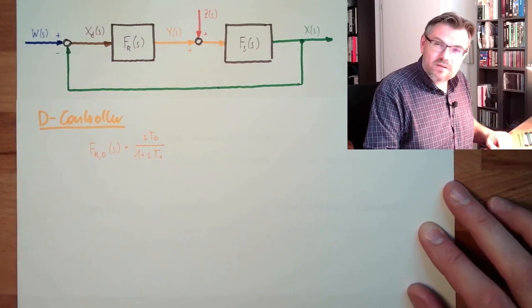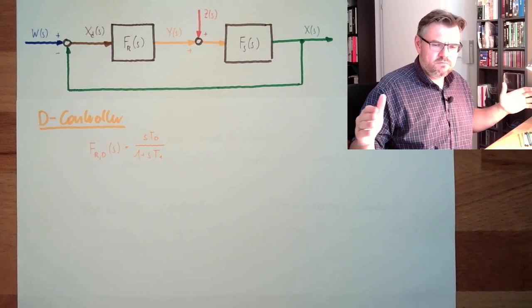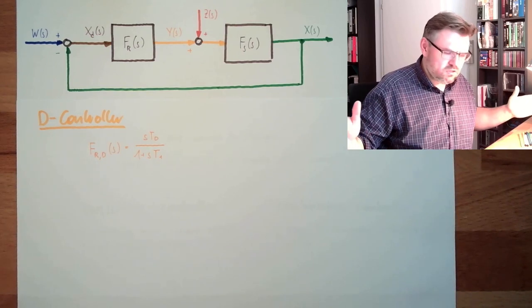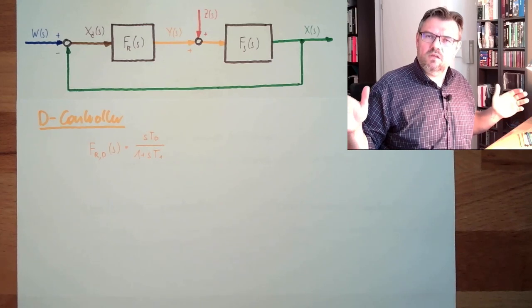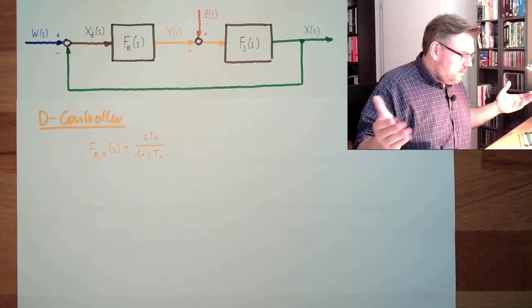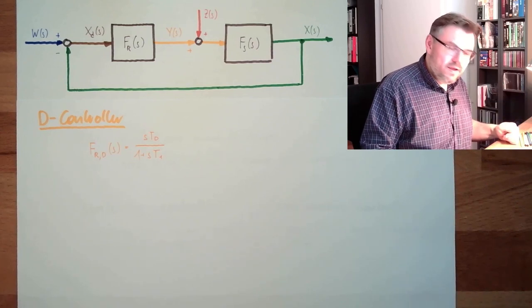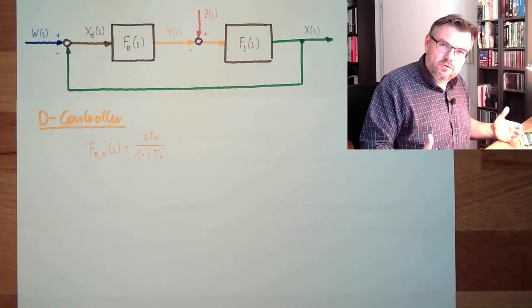The D-controller says, 'Okay, there is deviation, but it is constant. I don't really care, at least it is not getting worse.' This is why this is not really used. This is not usable.